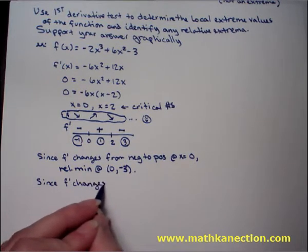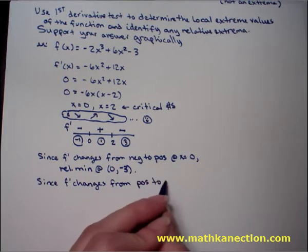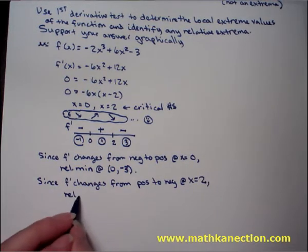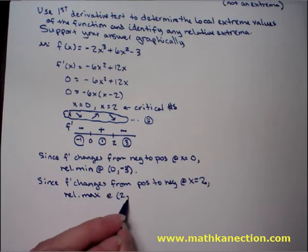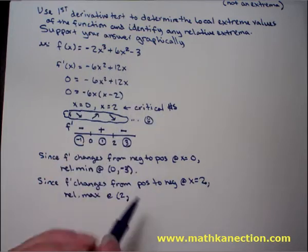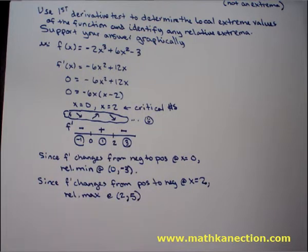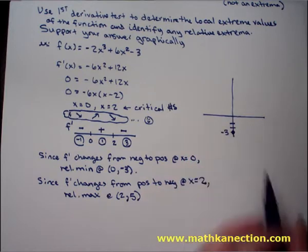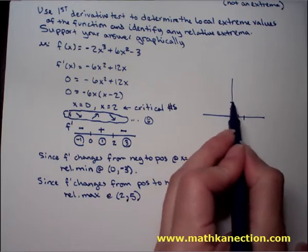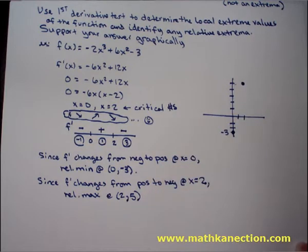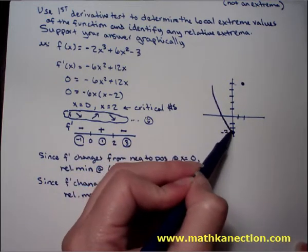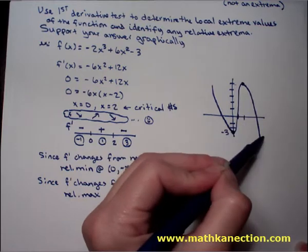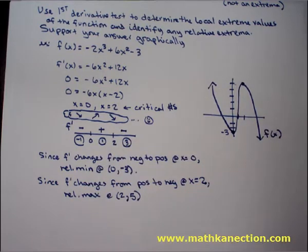Since f prime changes from positive to negative at x = 2, we have a relative maximum at (2, f(2)). Getting the y-value from the original function by substituting 2, we get a relative maximum at (2, 5). To sketch the graph to support this graphically: we have (0, -3) and (2, 5), with f decreasing, then increasing, then decreasing again. That's a sketch of f(x).